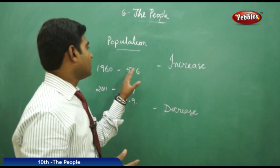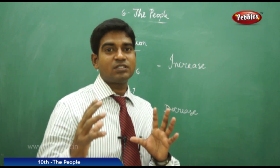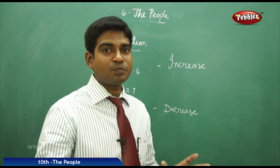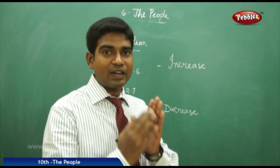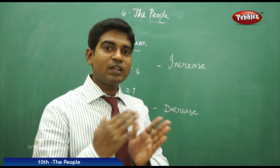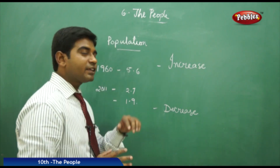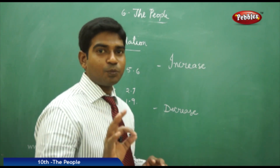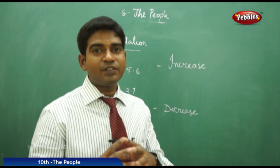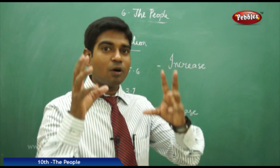Earlier, fertility levels in India were 5.6 in 1960 — meaning on average a woman could have five to six children in her lifespan. But by 2011 it came down to 2.7, and now in Andhra Pradesh it is only 1.9.